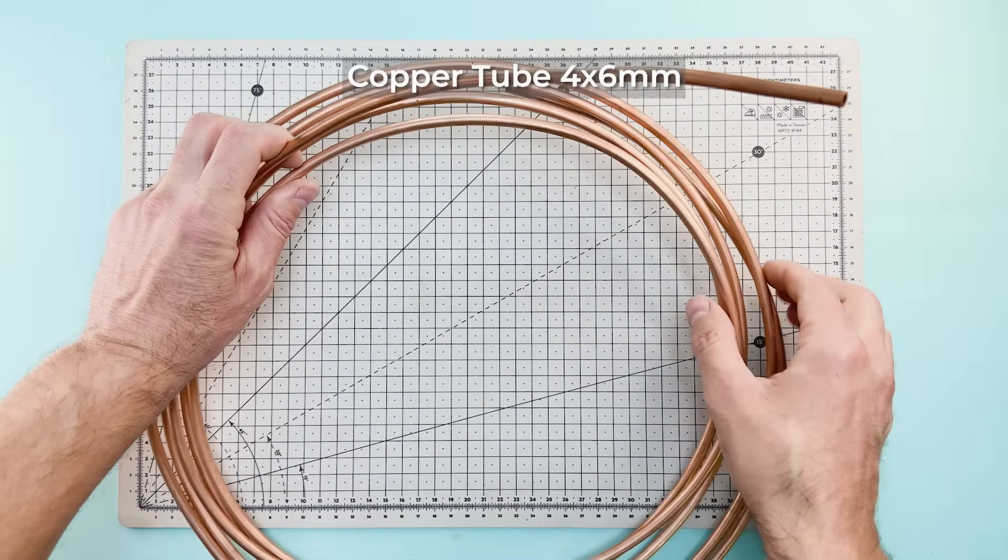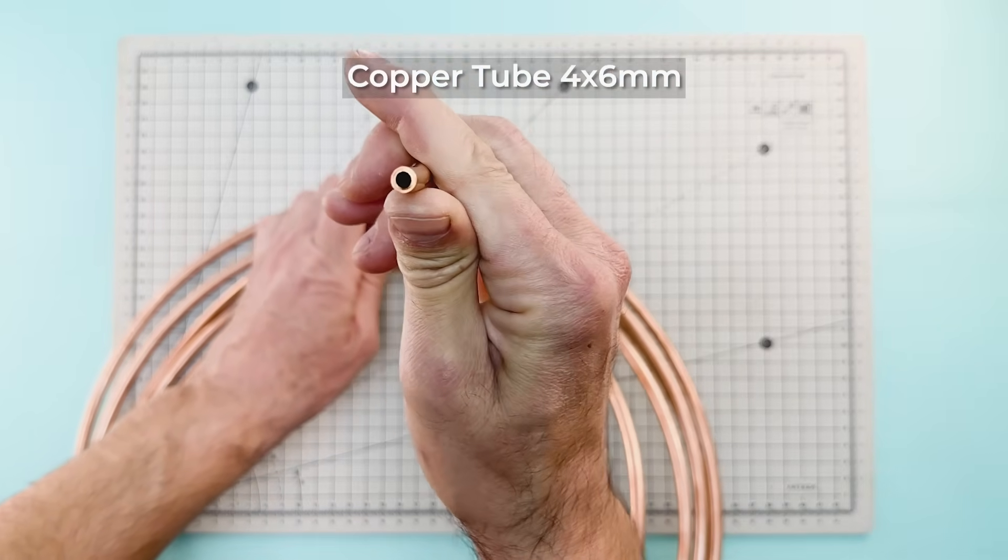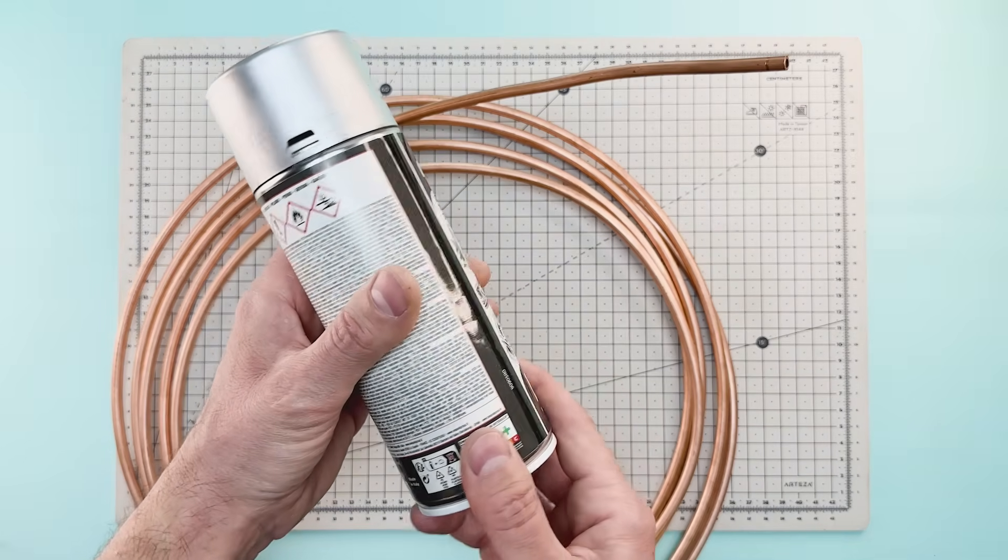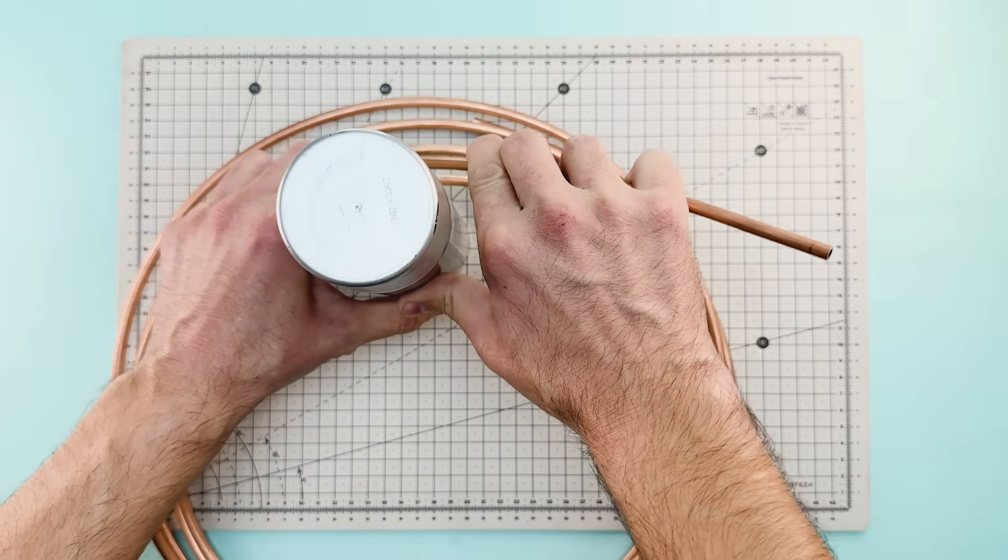To begin, we'll need a copper tube with a 4 x 6 mm diameter. Using something round like this paint can, we'll bend the copper into a spiral.